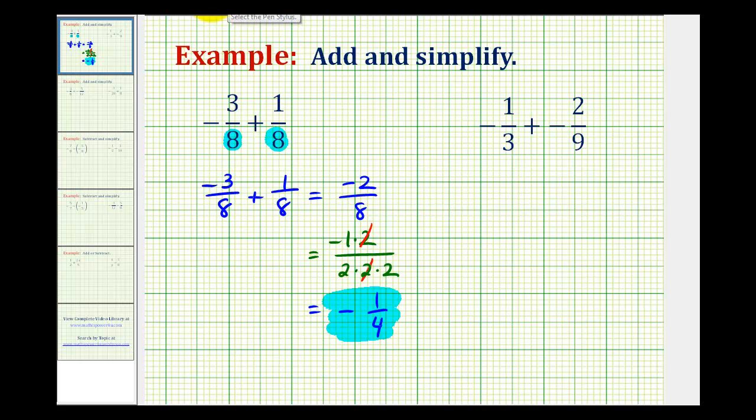Let's take a look at a second example. Notice in this example, we do not have a common denominator, so we will have to find the least common denominator of three and nine. So if you can look at these denominators and know that the least common denominator would be nine, that's great, but I do want to show a way how you can look at the prime factorization of the denominators to help determine the least common denominator.